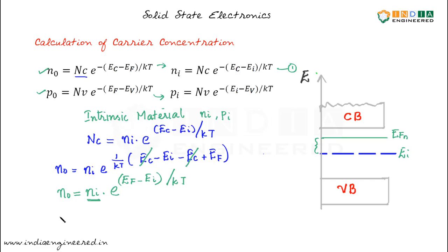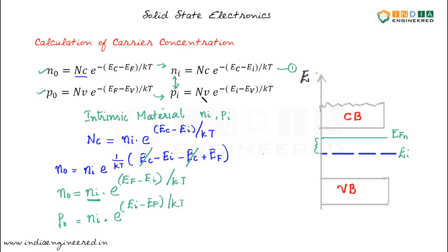Similarly, we can write the equation for P0 — that is the number of holes — in terms of Pi or Ni, because Ni equals Pi. These two are equal because we are talking about intrinsic material. Ni into E power, here it will be Ei minus Ef by Kt. In order to get this expression, all we need to do is substitute for Nv from this expression into this one. So we will get P0 equal to Ni into E power Ei minus Ef by Kt.